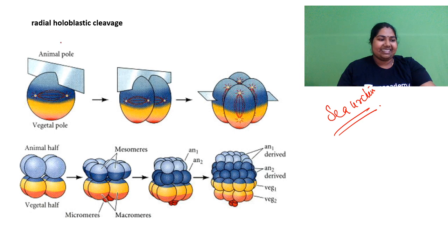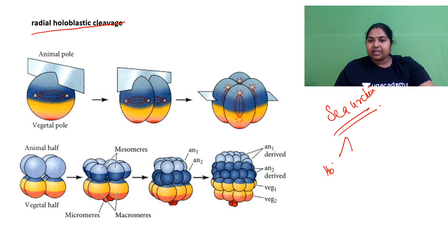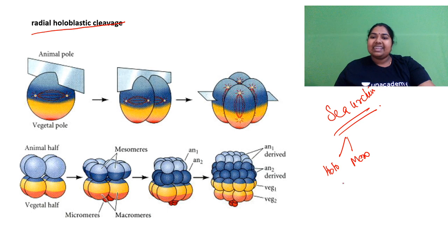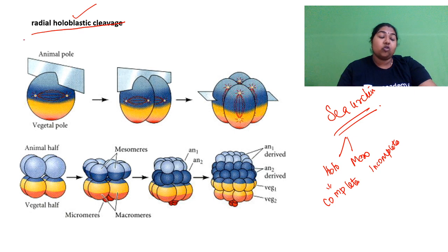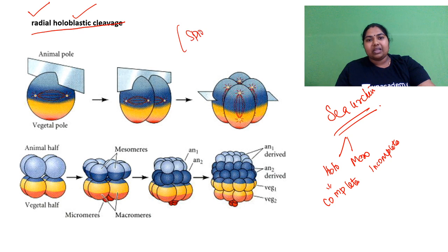So what is radial holoblastic? We have seen different types of cleavage. It is going to be holoblastic or meroblastic. Holo means it is a complete cleavage; mero is incomplete. Here it undergoes a complete cleavage following a radial holoblastic pattern. Do you remember which organism undergoes spiral holoblastic cleavage? Think and tell me. And rotational cleavage — that is with mammals.